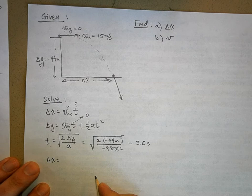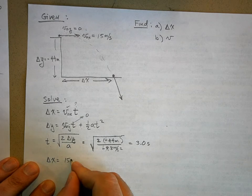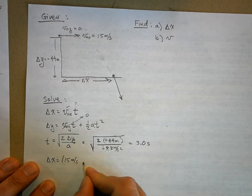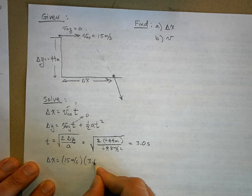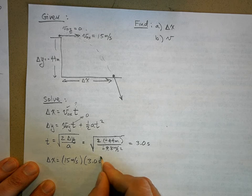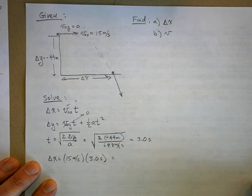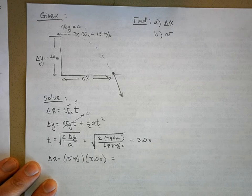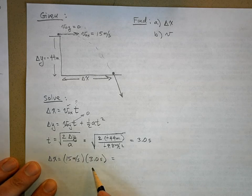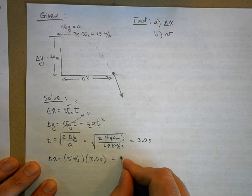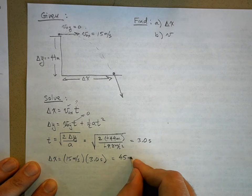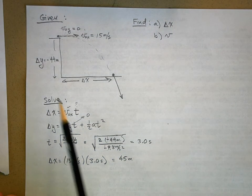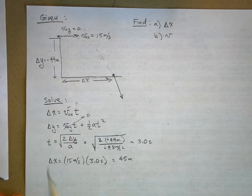Now that we know the time, we can solve for Delta X. Delta X equals 15 meters per second times 3.0 seconds, which gives 45 meters. So we now know how far away the rock will be when it hits the ground.